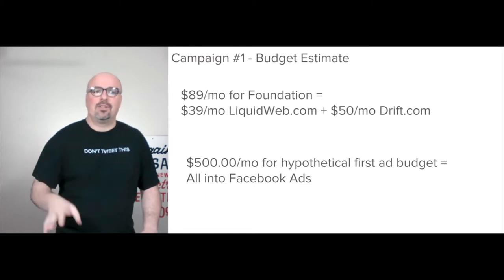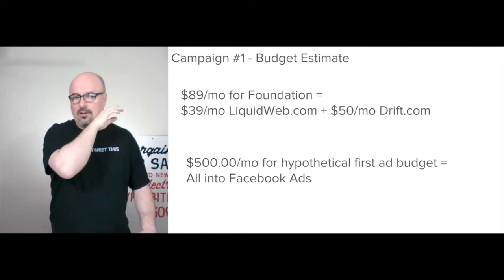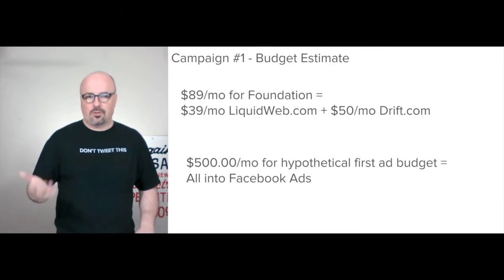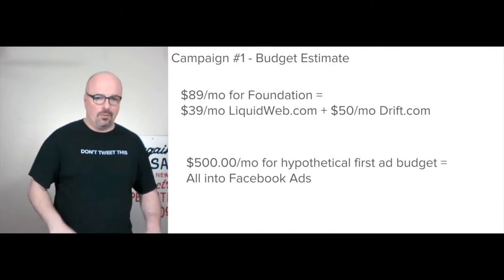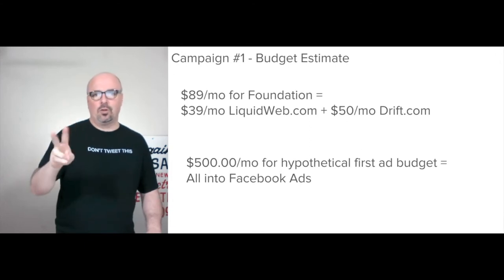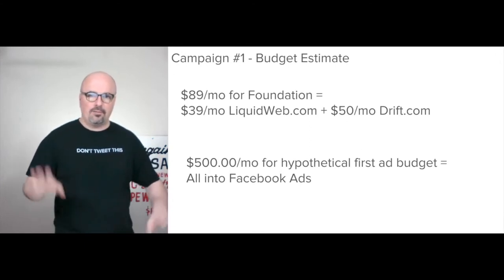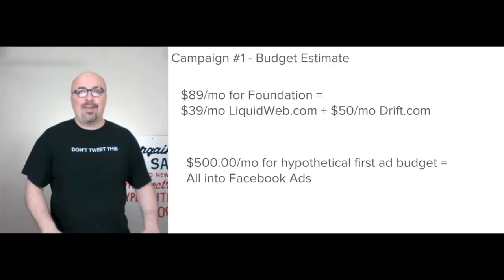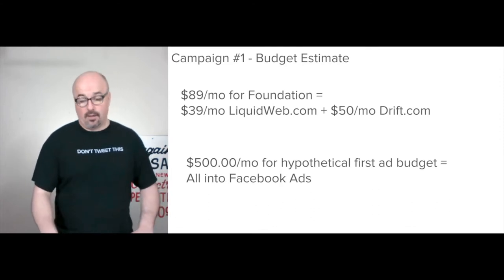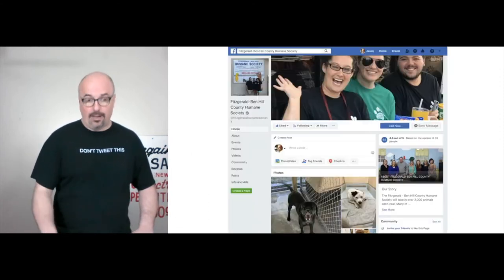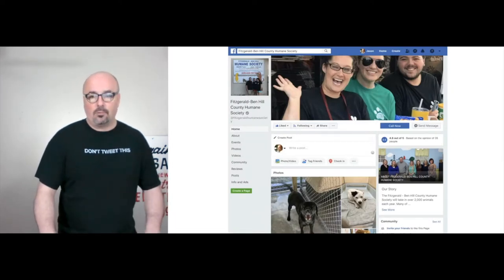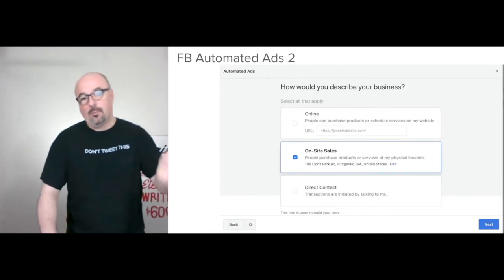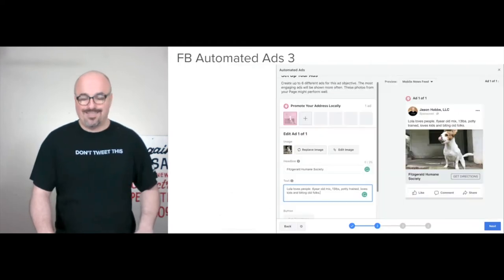The budget estimate for this would be $39 a month for LiquidWeb — go to liquidweb.com, it's the managed WooCommerce, start out with the beginner plan. Go to drift.com, $50 a month — that includes the email and two operators talking through live chat. And then $500 a month for the first ad budget. I'd start by dumping all that into Facebook ads. They already have a presence there, so you could even just start with the automated ads and point it, at least initially, towards on-site sales.